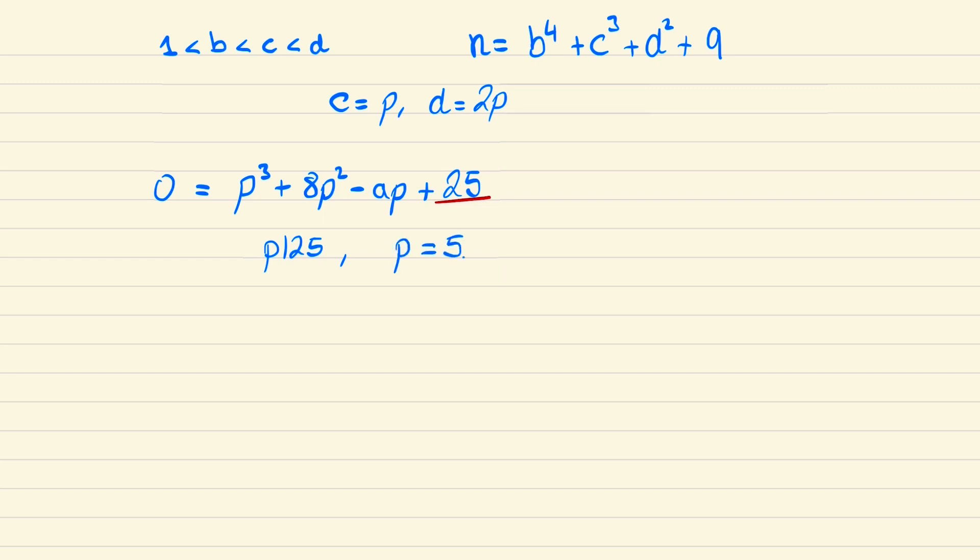And so we have possibilities for b equal to 2, c equal to 5, and d equal to 10. If we sub these three numbers into n, we find that n is equal to 16 plus 125 plus 100 plus 9, which gives a total of 250, which we can then write as 2 times 5 cubed. And it's not too difficult to check here that 2, 5, and 10 are the three smallest divisors of n. And so we're done.